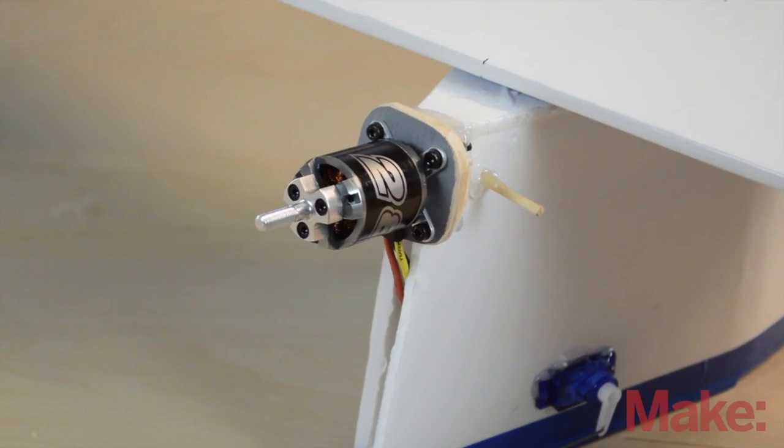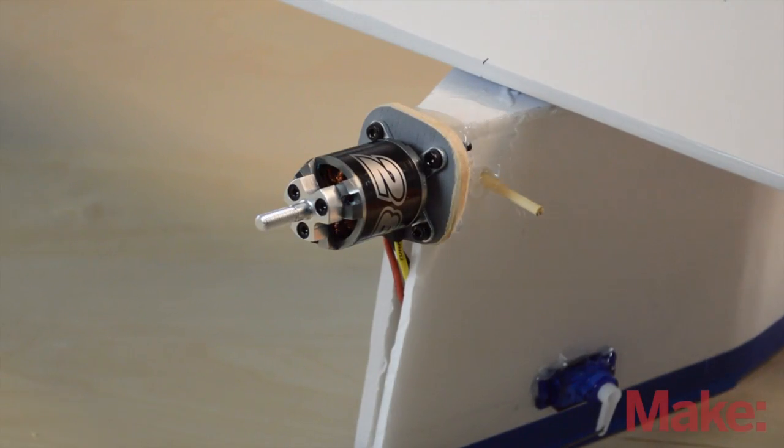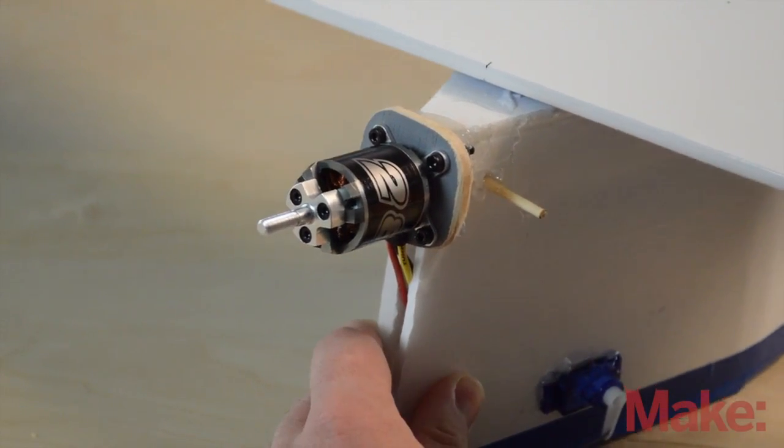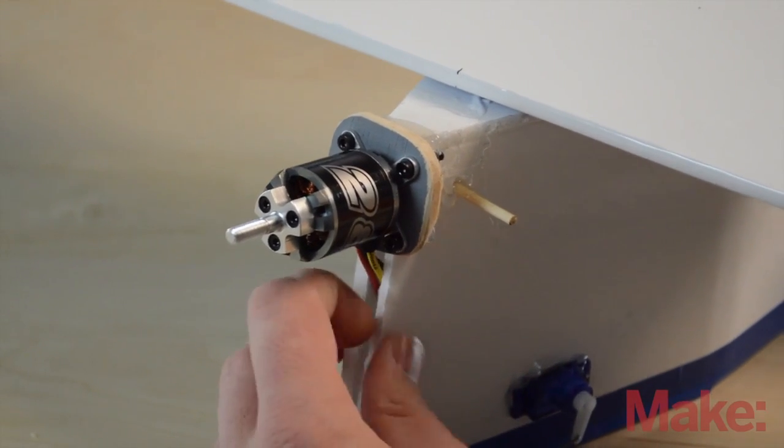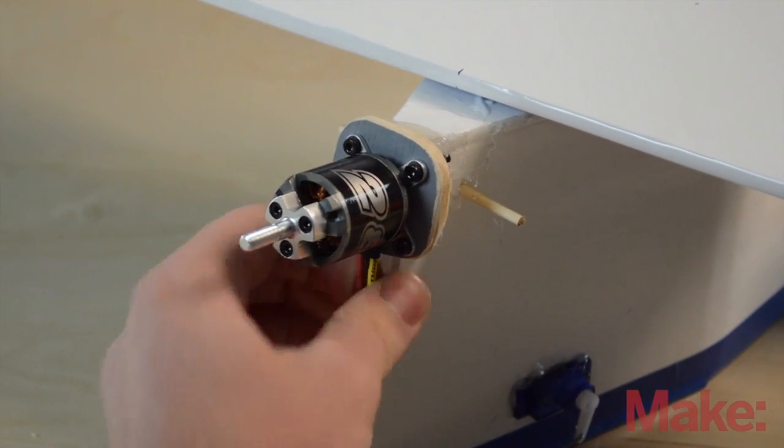So we're going to take off the prop, go into our fuselage, and we're going to reverse our motor. It's very simple to do. Just need to grab our wires out of here.